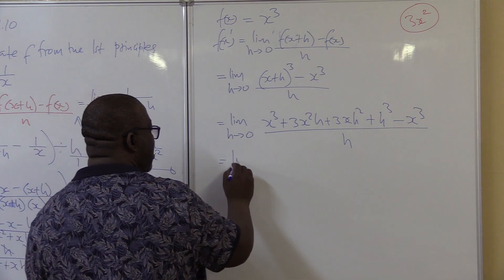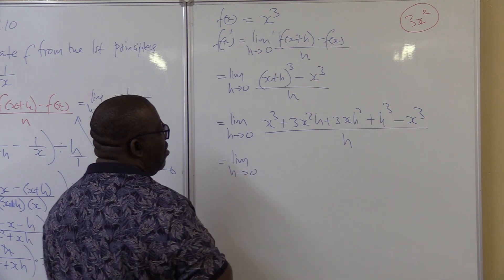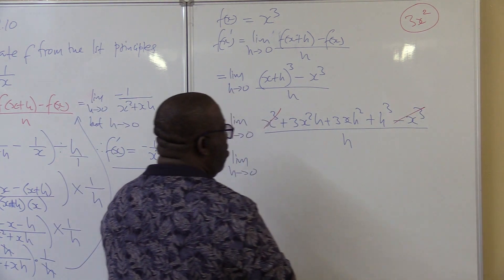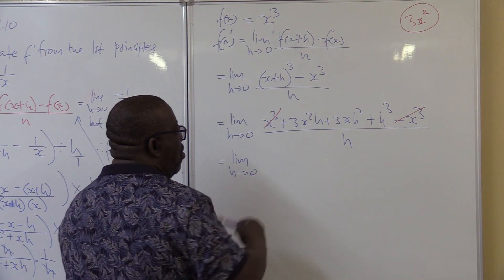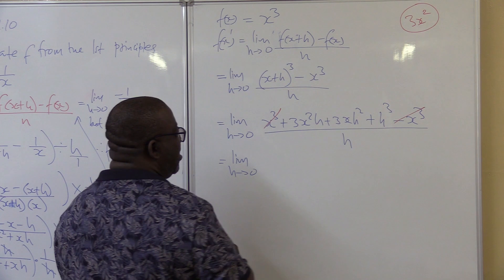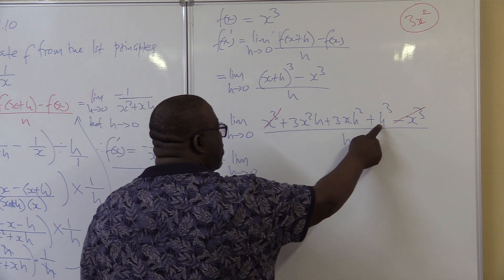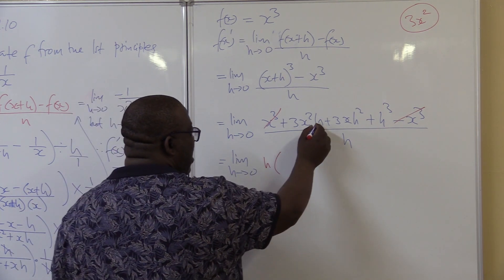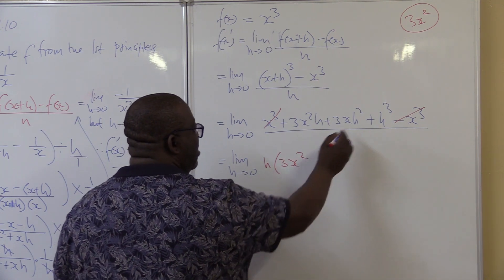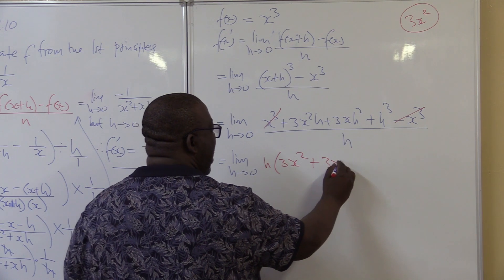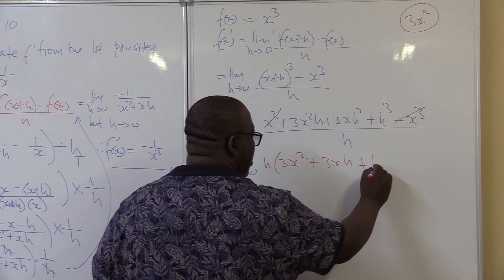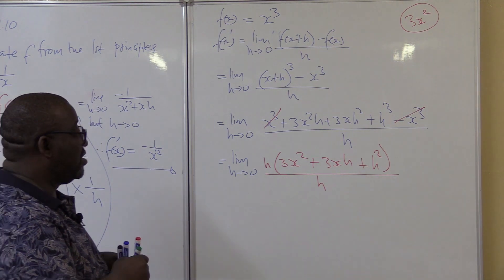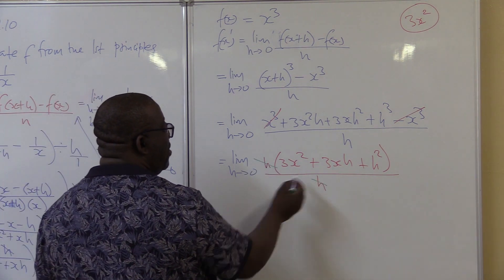This becomes the limit as h approaches 0. x cubed minus x cubed gives 0. We're left with 3 terms. Taking h out as a common factor from each term — dividing 3x squared h by h leaves 3x squared; dividing 3xh squared by h leaves 3xh; dividing h cubed by h leaves h squared. This is all over h, so the h's divide. That's exactly the situation I wanted.